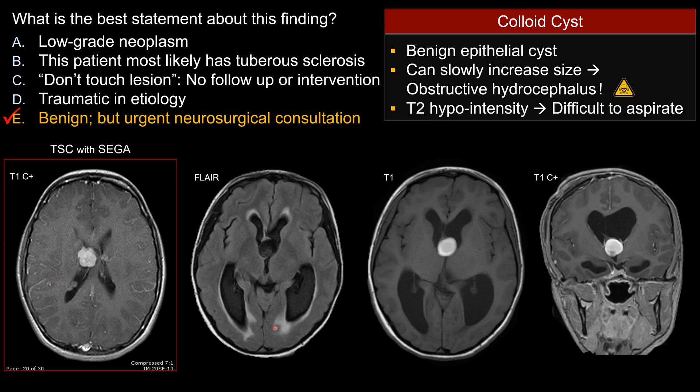Choice C is wrong because the patient does show signs of acute obstruction — uncompensated obstructive hydrocephalus with periventricular interstitial edema — so the patient does need intervention. Choice D is wrong because on CT, colloid cysts are hyperdense and can be mistaken for intraventricular blood. I have seen incidental colloid cysts in patients scanned for trauma, mistaken as intraventricular hemorrhage. But it's always unusual to have just one small intraventricular hemorrhage at that classic location without other signs of intracranial trauma. A small colloid cyst is the more likely diagnosis. So Choice D is wrong.